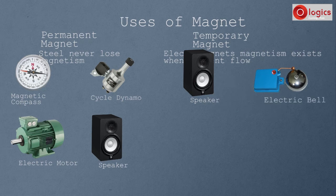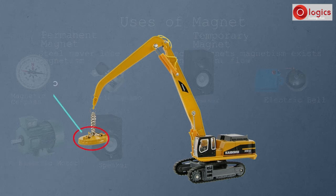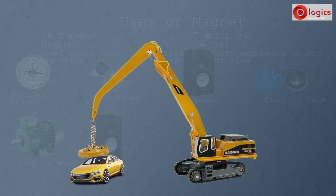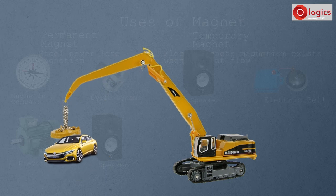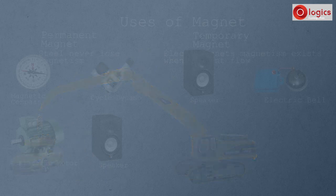Electromagnets are used in cranes. This is a crane — this part is made up of an electromagnet. When current passes, it acts as a magnet for lifting weights from one place to another. These cranes are used for that purpose.